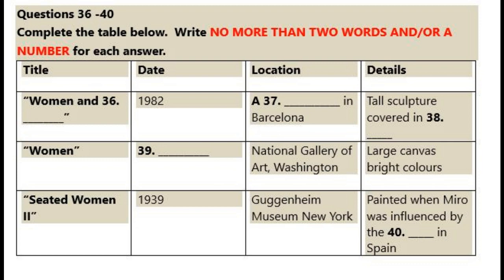And finally, something quite different, though still a woman. A harsh, even violent work that was completed in 1939, at a time when Miro was greatly influenced by events of the Civil War in Spain. It's titled Seated Woman 2, but it can be hard to find the woman here, as she's been transformed into a rather horrendous creature.